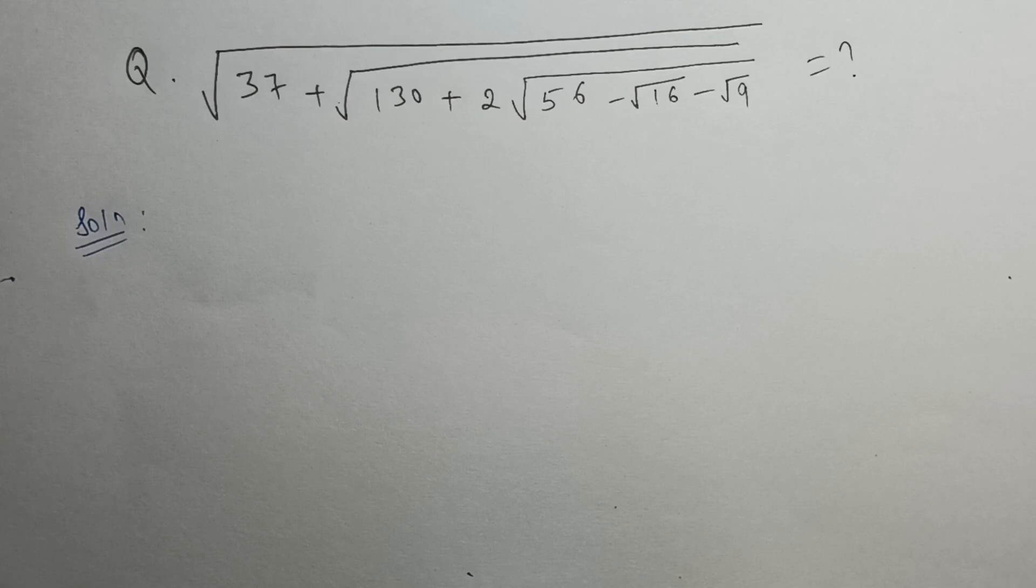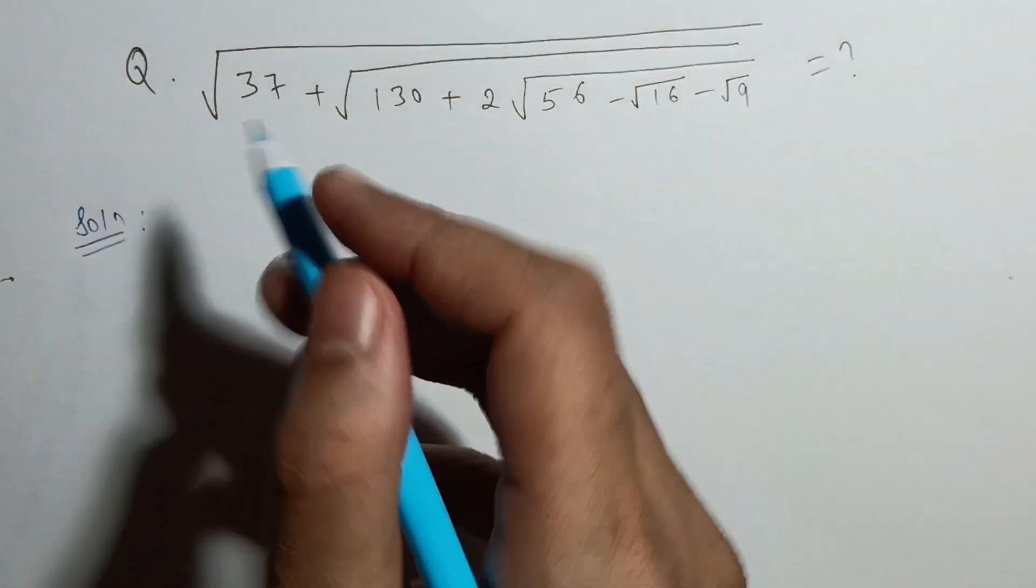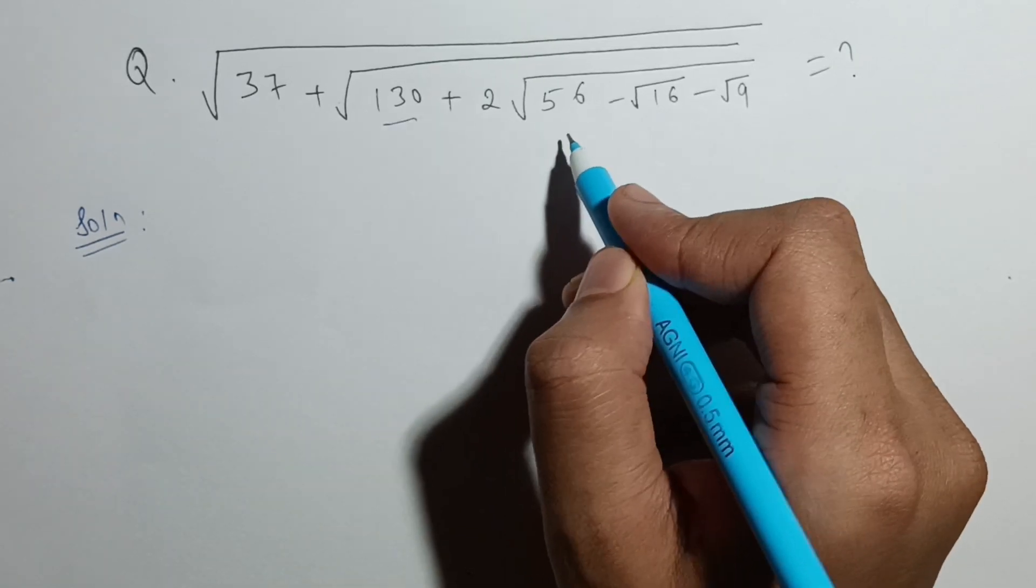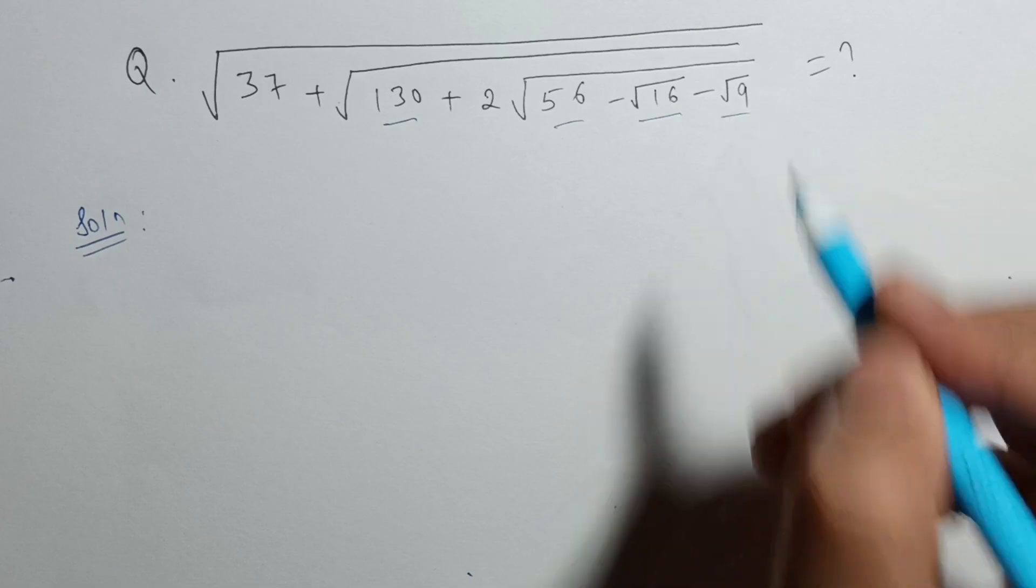In this video we will solve a nested square root problem. The question is: the square root of 37 plus the square root of 130 plus 2 square root of 56 minus the square root of 16 minus the square root of 9.